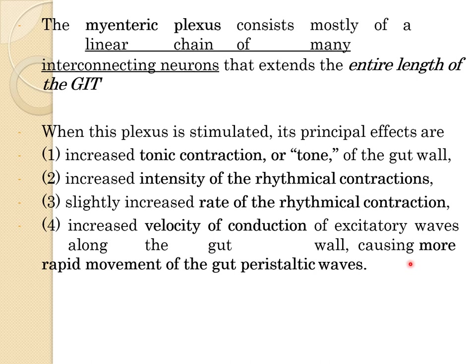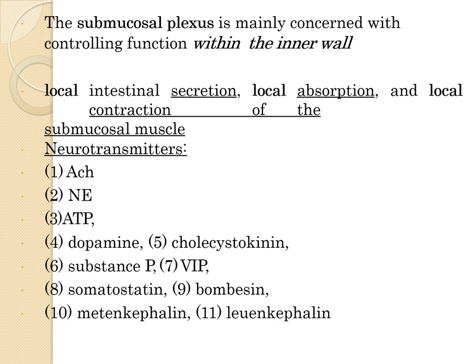The next plexus is the submucosal or Meissner's plexus. It is mainly concerned with controlling function within the inner wall — specifically controlling secretory activity and blood flow to the gut. By receiving sensory signals from the mucosal epithelium and from stretch receptors in the wall of the alimentary canal, it helps control local intestinal secretion, local absorption, and local contraction of the submucosal muscle.